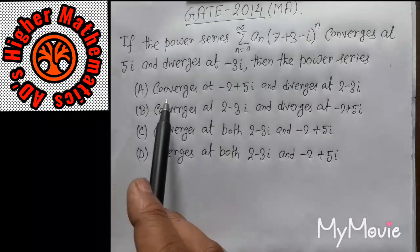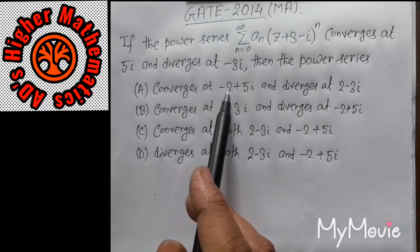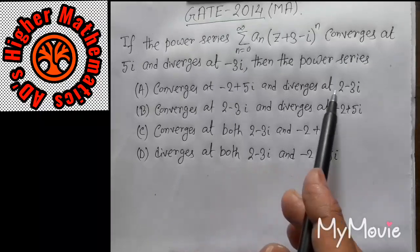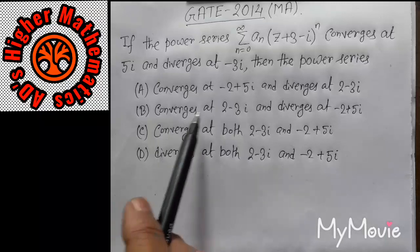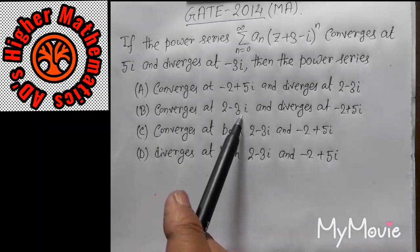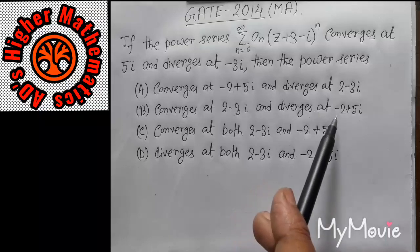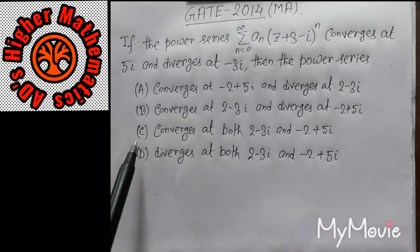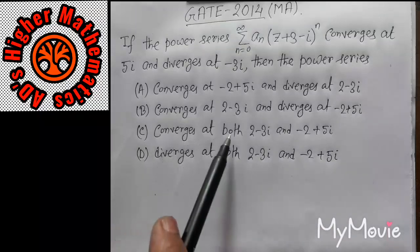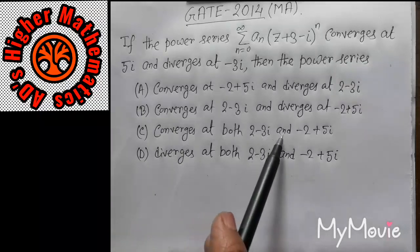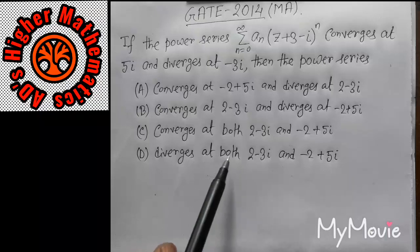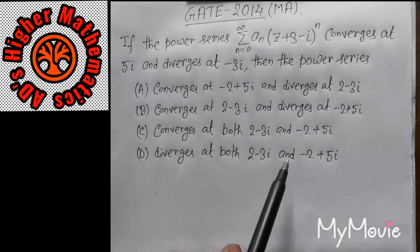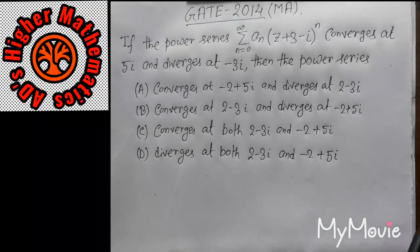Option A: converges at minus 2 plus 5i and diverges at 2 minus 3i. Option B: converges at 2 minus 3i and diverges at minus 2 plus 5i. Option C: converges at both 2 minus 3i and minus 2 plus 5i. Option D: diverges at both 2 minus 3i and minus 2 plus 5i.